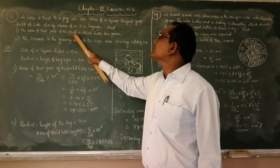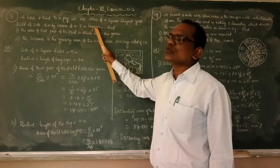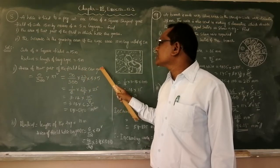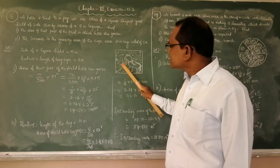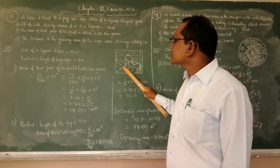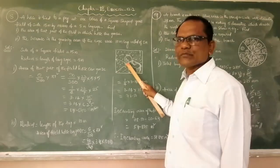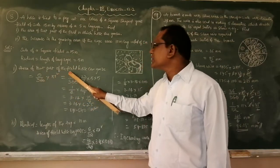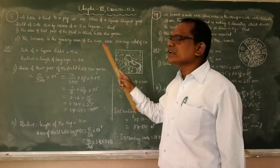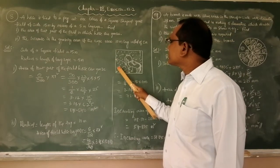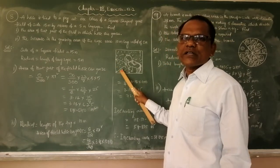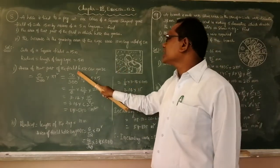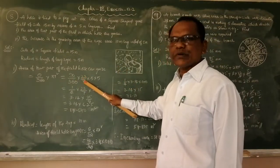The area of a sector formula is: (theta / 360) × π r². For the first part, find the area of the field the horse can graze with a 5-meter rope, where 5 meters is the radius. The area equals the sector formula: (theta / 360) × π r². The theta is not directly given, but because this is at the corner of a square, the angle of the corner of the square equals 90 degrees.